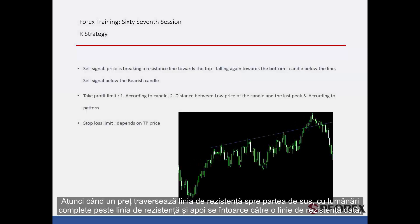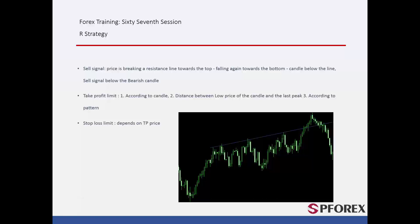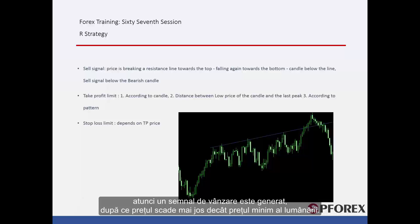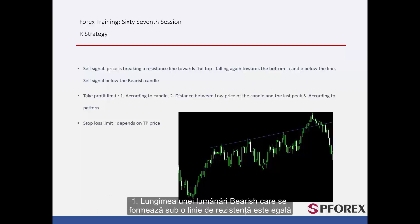Sell signal: When a price crosses the resistance line towards the top, with complete candles over the resistance line, and then returns to the resistance line — if price passes the resistance line towards the bottom and the close price of a candle forms under this line, then a sell signal is generated after price goes lower than the low price of that candle. Three take profit prices can be derived. First, the length of the bearish candle that forms below the resistance line equals X1; thus the first TP price can be X1 pips lower than the entry price.